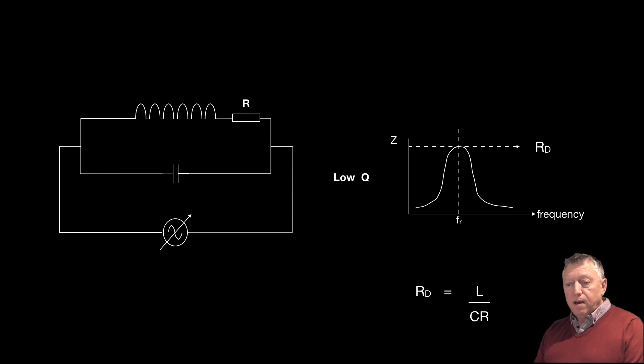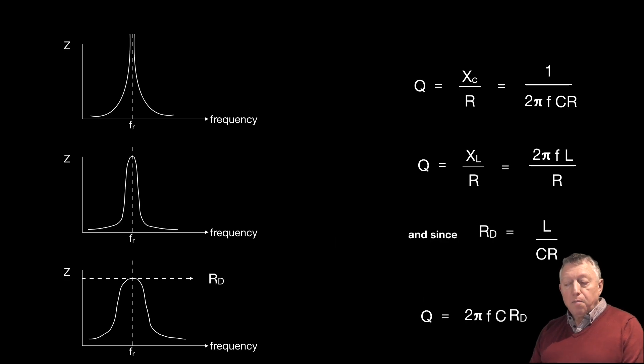So there we have an example here of a very, very high Q circuit on the left, a high Q circuit, and a low Q circuit, shown to give some examples. On the right, we've got the derivation of Q. We know that Q on the top equation equals XC over R. And on the second equation equals XL over R. And we know what XC is. We know it's 1 over 2πFC. And we know what XL is. It's 2πFL.